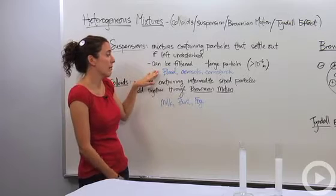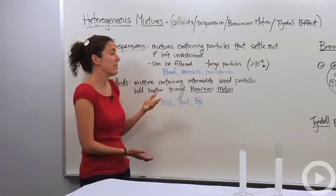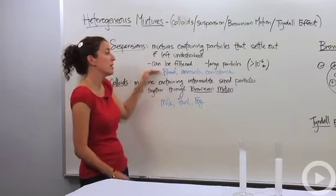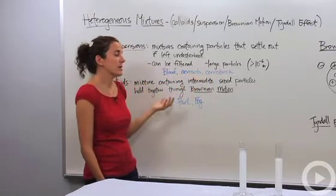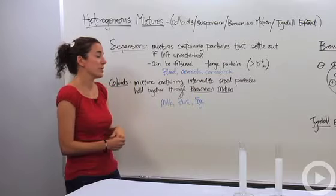Blood. If you leave blood undisturbed, it will actually separate out. You can filter it or centrifuge it to separate it. Aerosols, corn starch and water, those kinds of things are types of suspensions.